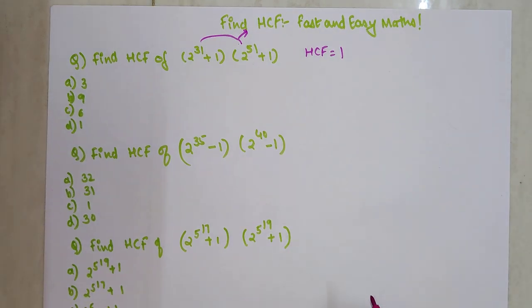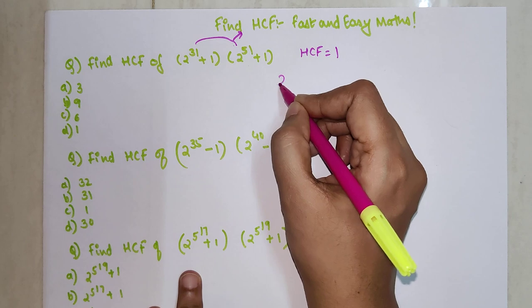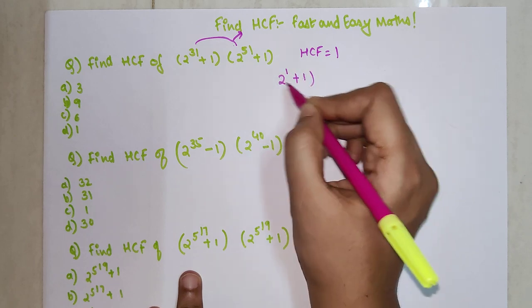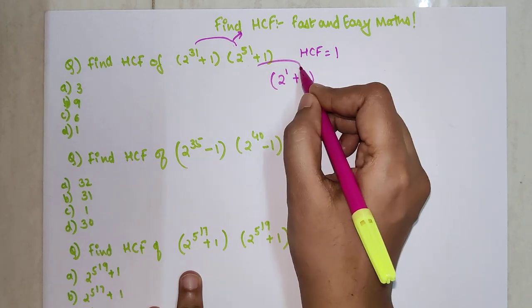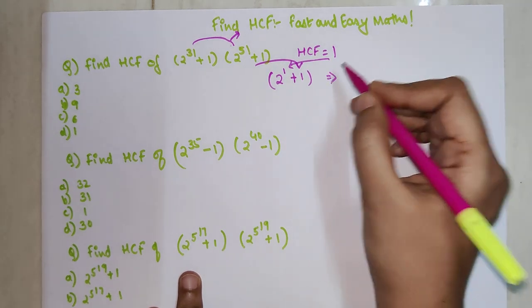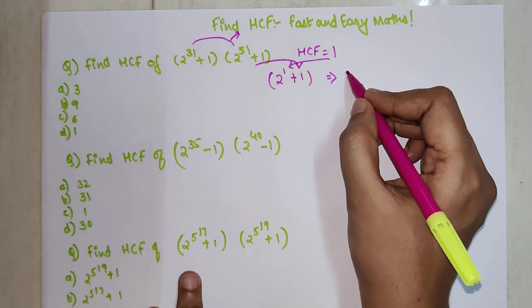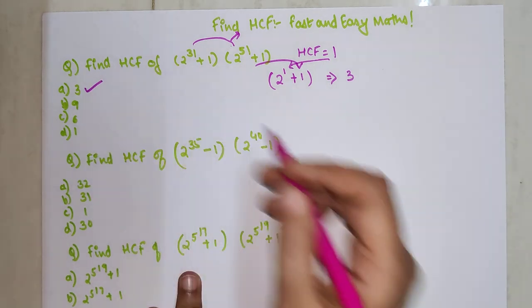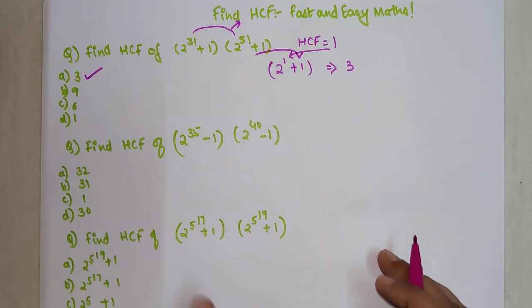So here you write 2^1 + 1. The 1 comes from the HCF. 2^1 is 2, plus 1 gets you 3, so option A is the correct answer.